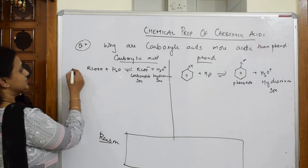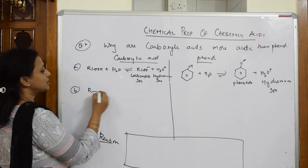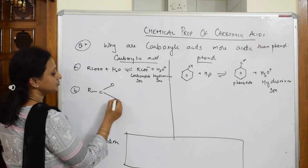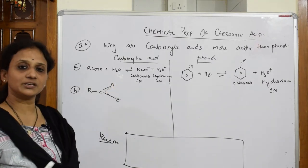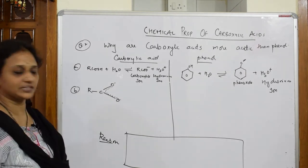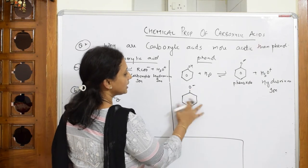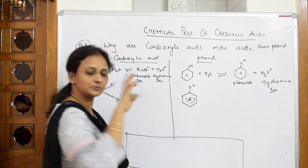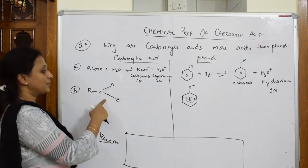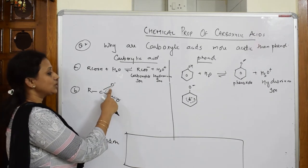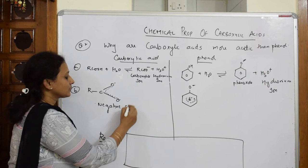Let me label this side A and this side B. Both show resonance — the carboxylate ion also shows resonance with R–C(=O)–O⁻. What I'm going to show now is charge dispersion. The double bond shifts and single bond shifts, showing the delocalization of pi electrons. What happened? The negative charge is delocalized or dispersed between two oxygen atoms.